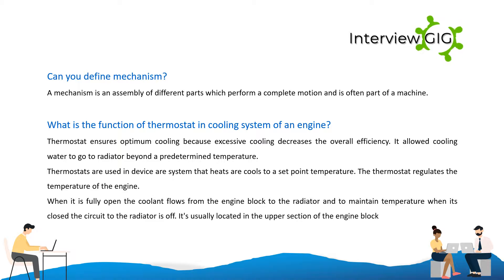What is the function of the thermostat and cooling system of an engine? Thermostat ensures optimum cooling because excessive cooling decreases overall efficiency. It allows cooling water to go to the radiator beyond a predetermined temperature. When fully open, coolant flows from the engine block to the radiator to maintain temperature; when closed, the circuit to the radiator is off. It is usually located in the upper section of the engine block.